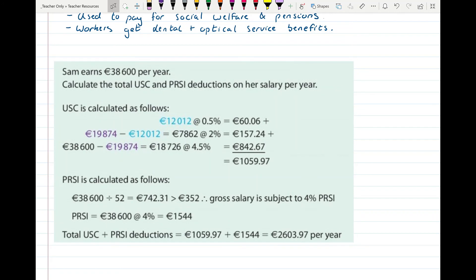So here's an example where Sam earns €38,600 per year. Calculate the total USC and PRSI deductions on her salary per year. So again, these will be in addition to her income tax. USC is calculated as follows. The €12,012 is taxed at 0.5%, so that's €60 that she's paying on that. Then between the €12,012 and the €19,874, that's getting taxed at 2%. So that means that €7,862 is getting taxed at 2%, meaning that's another bit of tax of €157.24. And then she's earning between the €19,874 and the €38,600. That's getting taxed at 4.5%. So that's another €842 in tax. And when you add all that up, she has a total USC bill of €1,059.97. So that's her USC.